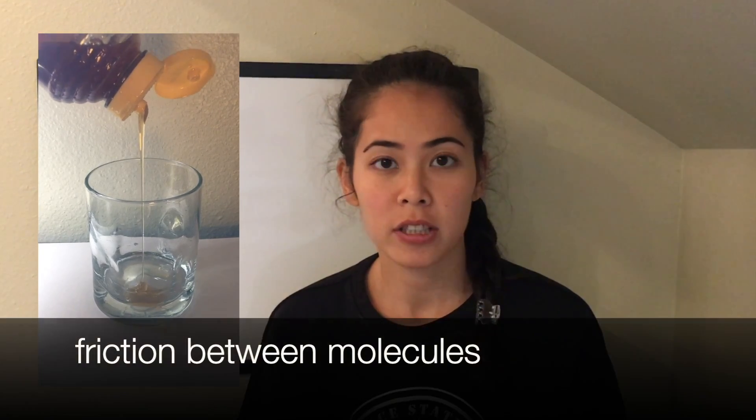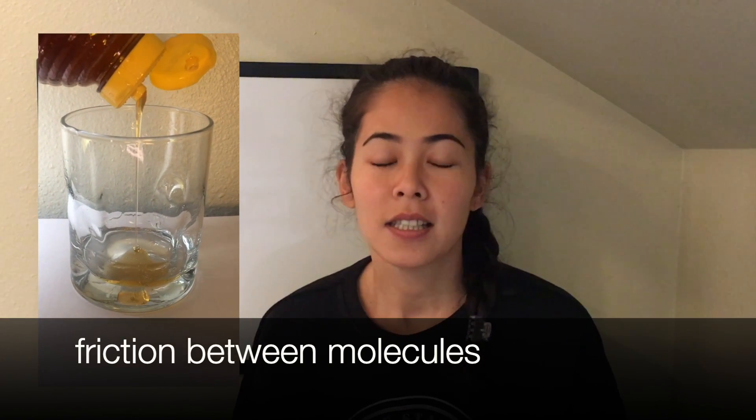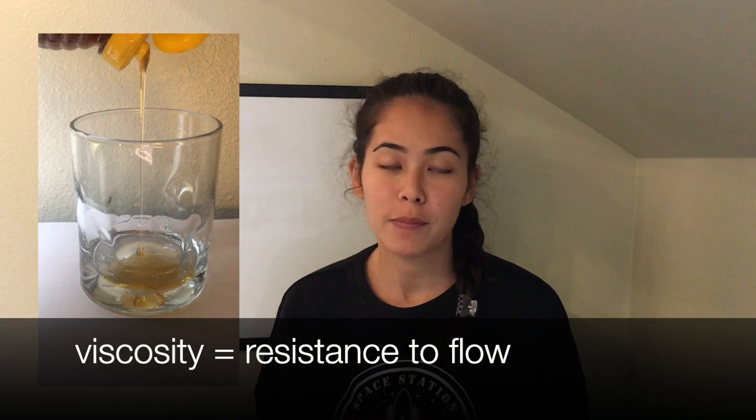But why does that happen? This happens because there's a lot of friction between the molecules of honey and this friction keeps the molecules from moving. So that is why honey flows slower, or we can also say that it is difficult to make honey flow.